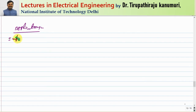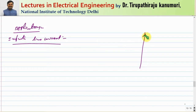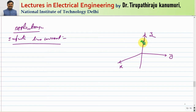Starting with the infinite line current: let us assume a line current is lying along the z-axis. This is my z-axis, this is my y-axis, and this is my x-axis. Let us assume the current extends to infinite length along the z-axis and is given by I. To calculate this, we take one Amperian path. The Amperian path should be chosen such that the value of H along it is either in the same direction as the path or equal to zero.